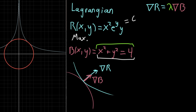The Lagrangian — the point of this video — is basically just a way to package up those equations along with the constraint into a single entity. It's not really adding new information, and if you're solving things by hand it doesn't really do anything for you. But what makes it nice is that it's something easier to hand a computer.